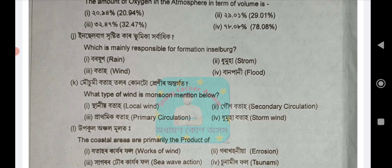Next question: What type of wind is monsoon? Options: local wind (sthanyo bata), secondary circulation wind (goona bata), primary wind (prathomik bata), or cyclone wind (dhumoha bata)? The answer is option number 2: goona bata — secondary circulation.